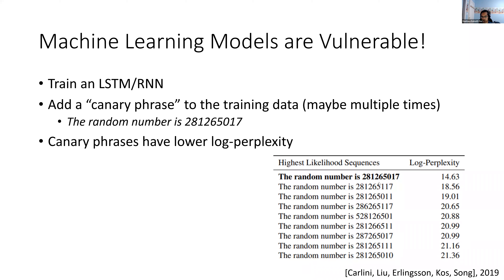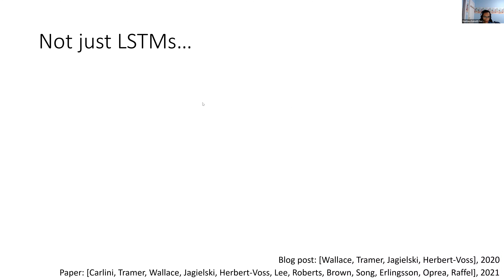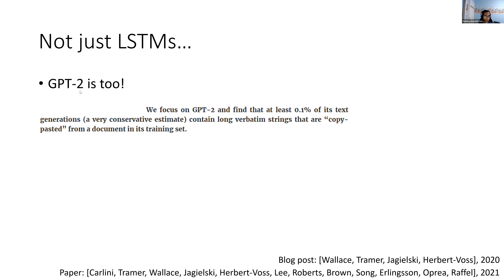You might not think this is that bad — a random number is whatever — but this could actually be pretty bad if, for example, we're talking about 'my social security number is blank.' This seems like a vulnerability in which the model is leaking information about the training set. You might be thinking this is just LSTMs — who uses LSTMs anymore? But it's not just LSTMs. There's also another paper, also by Carlini et al., with another set of co-authors, and they found that GPT-2 is susceptible as well.